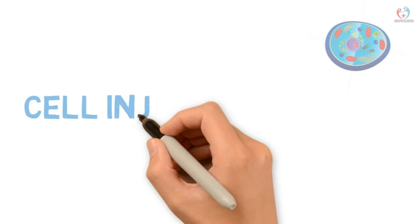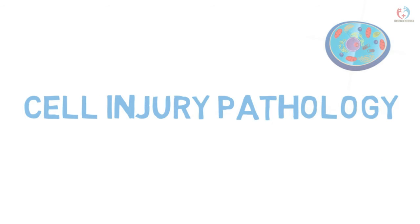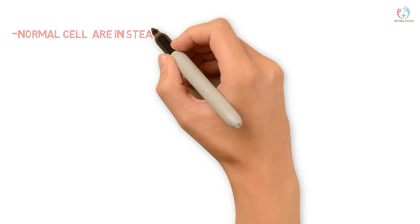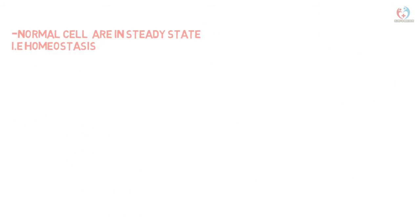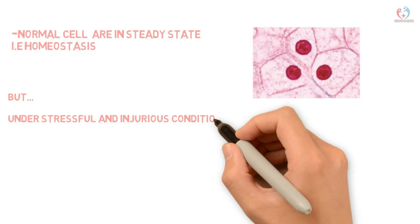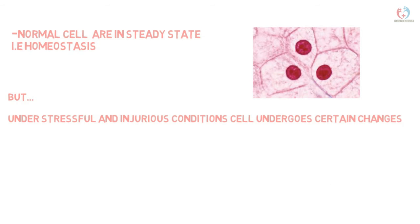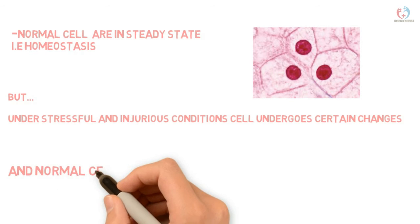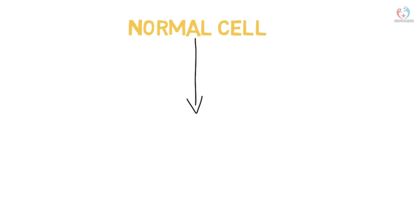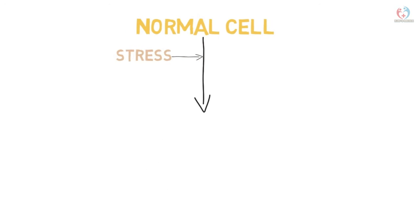This video is about cell injury in pathology, elaborating the mechanism of injury along with cellular adaptations. Normal cells are in a state of homeostasis, meaning the cell is able to perform its function within physiological limits. Under stressful or unjust conditions, cells lose their homeostatic status. In injuries and stressful conditions with stimuli like radiation, mutation, or pathogenic reactions, the cell is converted into abnormal morphology.